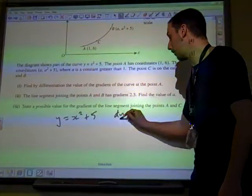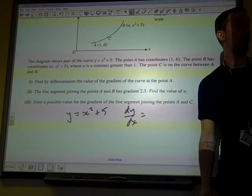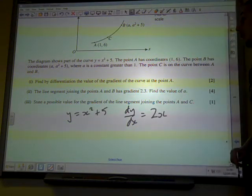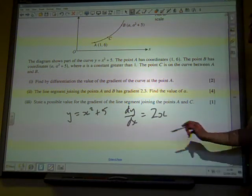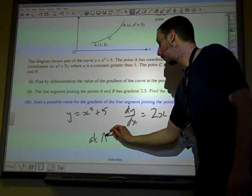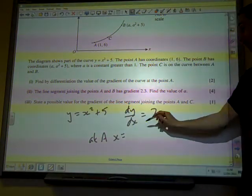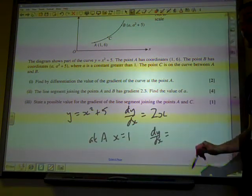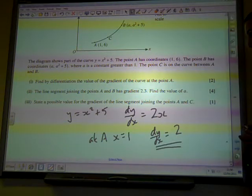What would we get if we differentiate x² + 5? 2x, that's it, just 2x. Find the value of the gradient of the curve at point A. Well, at A, x = 1. So dy/dx = 2 times 1 equals 2. There we go, that's why it's only 2 marks.